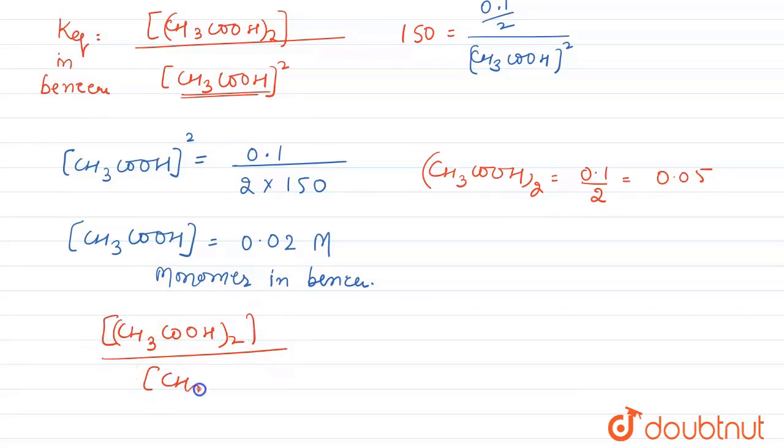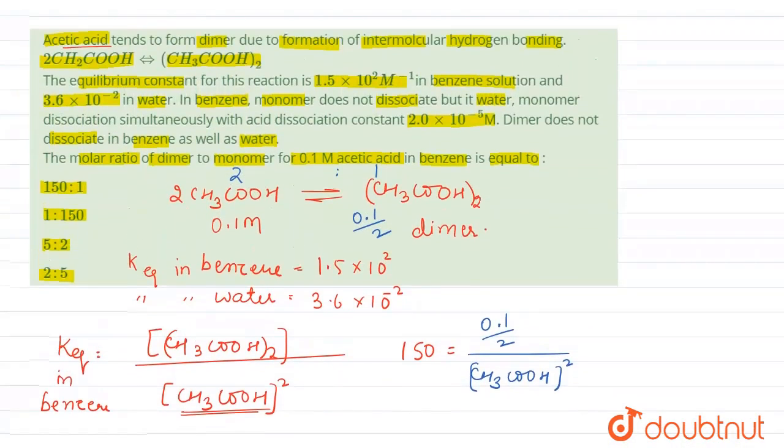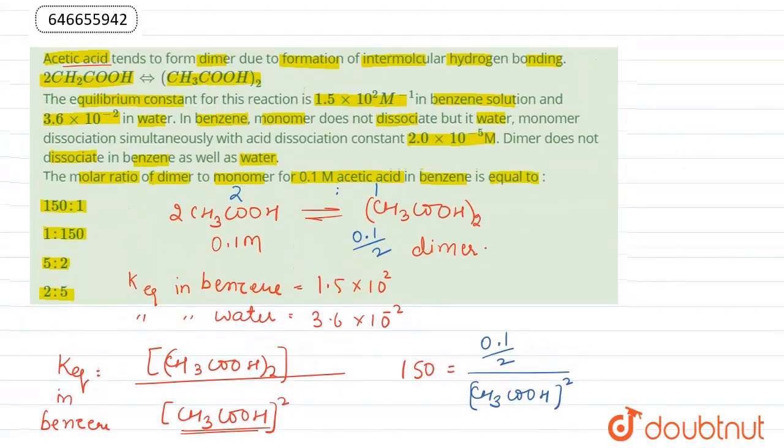So their ratio becomes (CH3COOH)2 divided by CH3COOH equal to 0.05 divided by 0.02 that we have calculated. So the ratio of dimer to monomer is 5:2. And according to this explanation, we can write the correct choice for this question is option C, 5:2 is correct answer for this question.